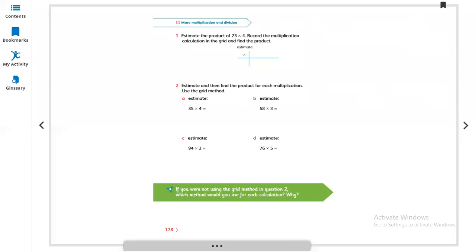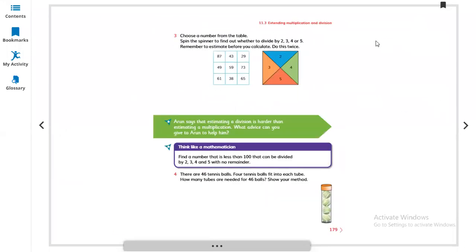Let us move to the next part, page 179. Question number 3: choose a number from the table, spin the spinner to find out whether to divide by 2, 3, 4 or 5. Remember to estimate before your calculation. Do this twice. Let us do any two numbers. 87, it's an odd number. So 87 divided by 3, we got a reminder.